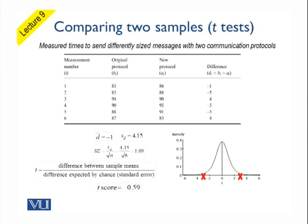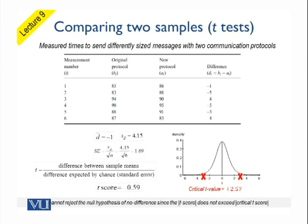We calculate the critical T-value. For degrees of freedom of 5 (since we have 6 readings), the critical value is ±2.57. Our T-value is minus 0.59, whose magnitude 0.59 is less than 2.57. Because of that, we fail to reject the null hypothesis and say that the two treatments are equal, since we cannot establish the case for the alternative hypothesis.